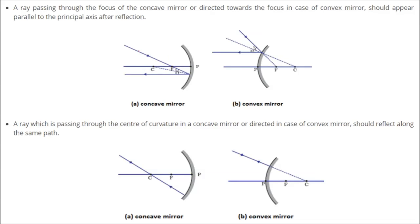A ray which is passing through the focus — for a concave mirror or directed toward the focus in a convex mirror — should appear parallel to the principal axis after reflection. If a ray is coming and passing through focus, whenever it reflects it has to be parallel to the principal axis. So when it comes like this and if we extend it, passing through focus, then when it reflects it should be parallel to the principal axis.